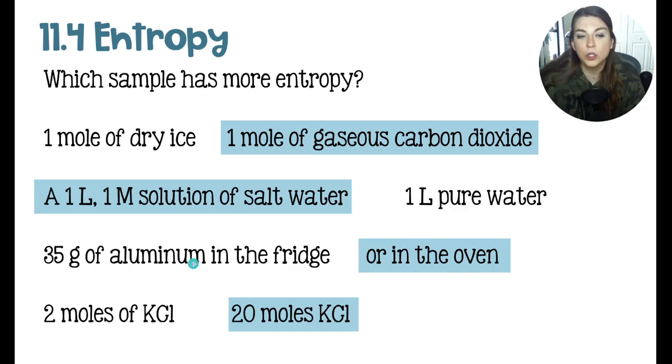If we had 35 grams of aluminum in the fridge versus the oven, the sample in the oven is going to have more entropy. And that's because the temperature is going to be hotter. So in this case, the temperature is what is controlling the entropy. If we have a hotter sample, so long as all other conditions are the same, is going to have more entropy. And that's because even though this is still a solid, these particles are going to be vibrating faster in space. So they have more entropy.